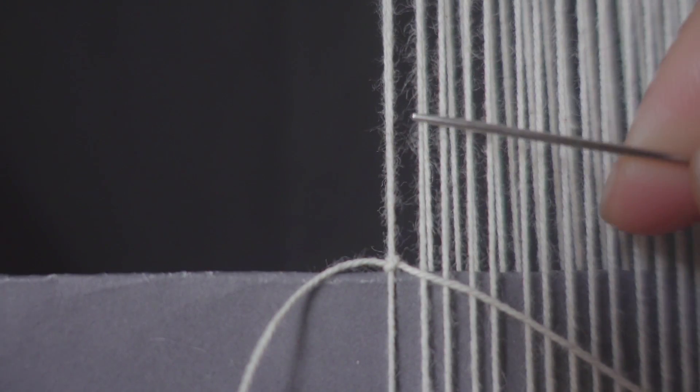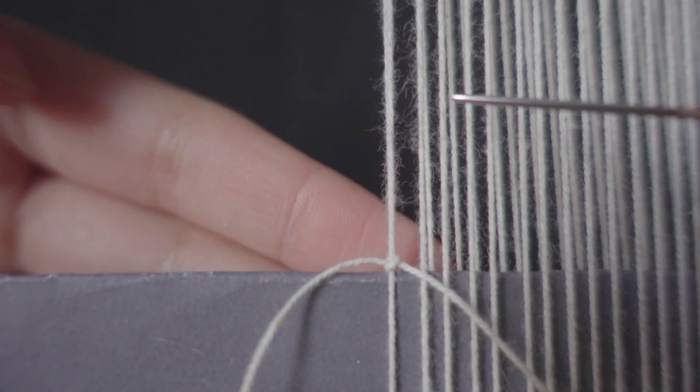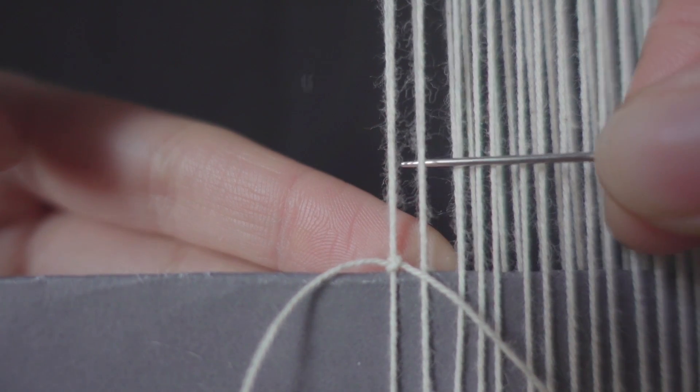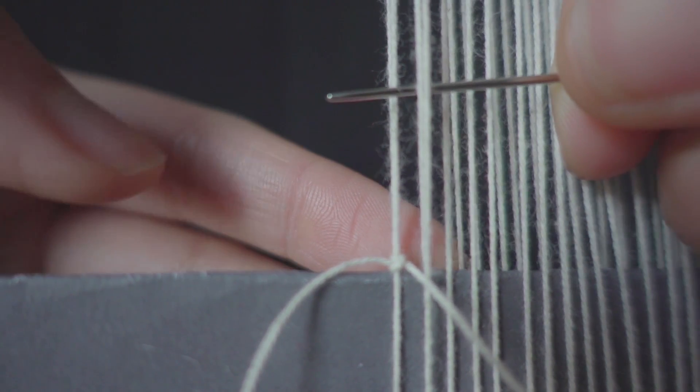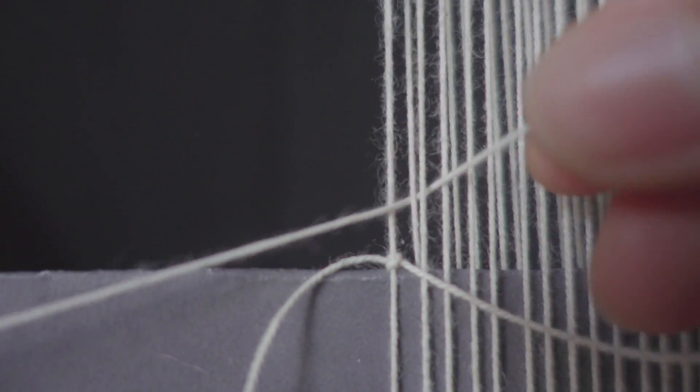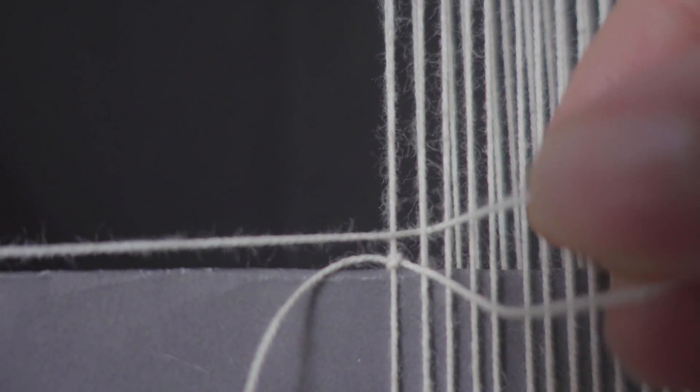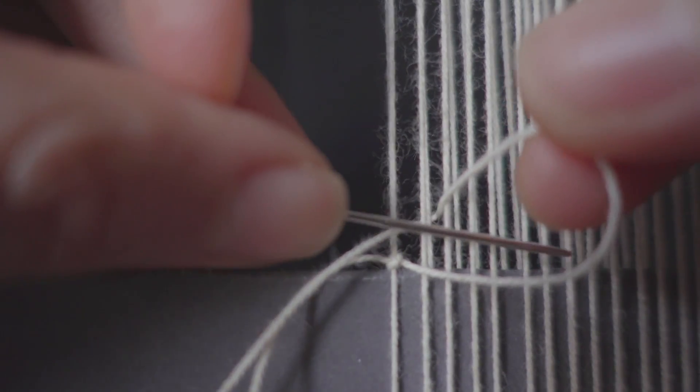So let's continue with the other ones. Here we just, from the right side, we just take the next two warp threads. We go underneath. This time we just need to make one loop like this and then go inside the loop with the needle right away.